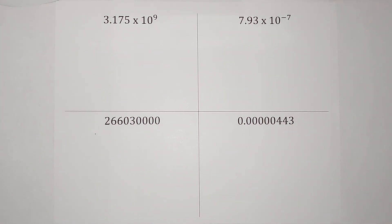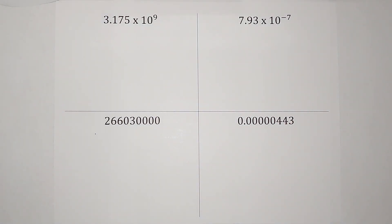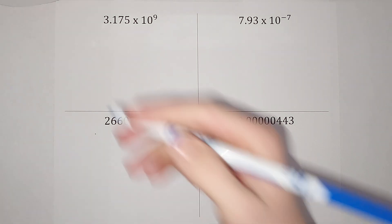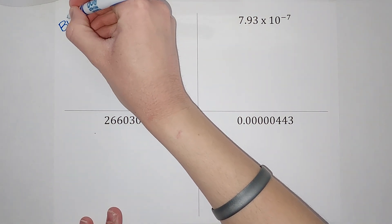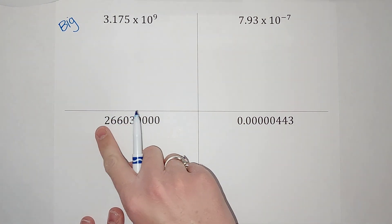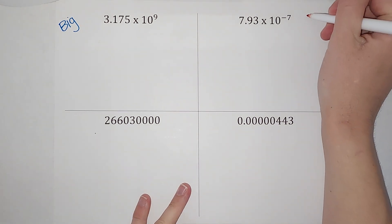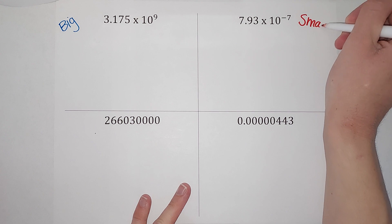Hey guys, we are looking at scientific notation today. This is something we use for really big numbers and really small numbers — it makes them easier to compare, to know how much they are, to add, subtract, multiply, divide. I'll link a whole playlist where we do those things if you need to look at that. On this side I've got really big numbers, and we're going to take one in scientific notation and put it into standard notation, then take one from standard notation and put it into scientific notation. The same thing over here for really small numbers.